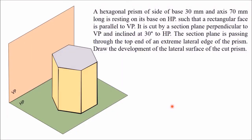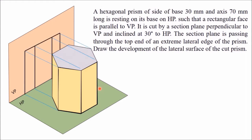In this video we will discuss development of lateral surfaces of a cut prism. I have taken an example of a hexagonal prism with base side 30 mm and axis 70 mm, resting on its base on HP. This is one base kept on HP; the prism sides are 30 mm and the height is 70 mm. First we will draw projections of this prism — top view first, because the true shape of the base is visible in top view, and then the front view. Once we draw both views, we will cut the prism with a section plane.